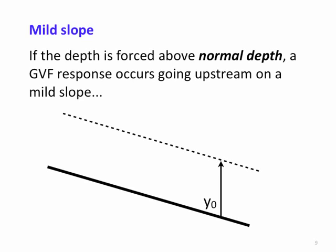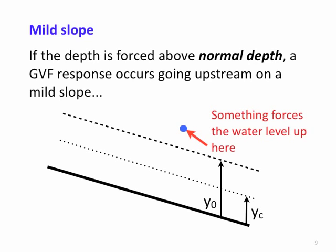For the third mild slope case, if something forces the water level up above the normal depth, again we're subcritical so we expect an adjustment upstream. Indeed, there is a GVF response profile that goes upstream and meets back at the normal flow depth.